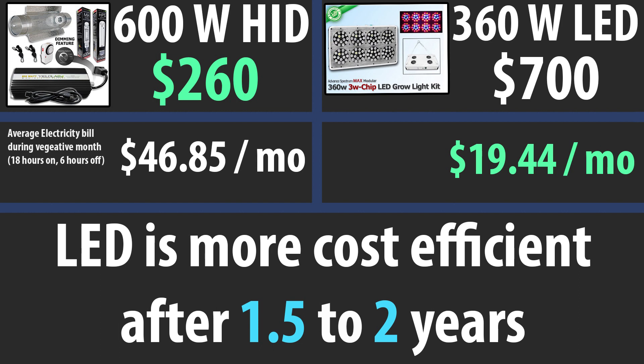A 600 watt HID is going to cost you about $260 while the comparable LED is going to cost you $700. To make up your costs from the LED it'll take about one and a half to two years to make up that cost depending on how much you're using the lights. If you're curious to see how we calculated that, watch the rest of this video.